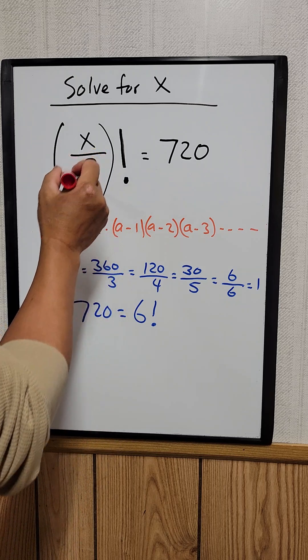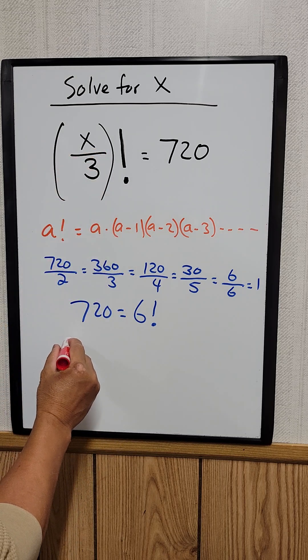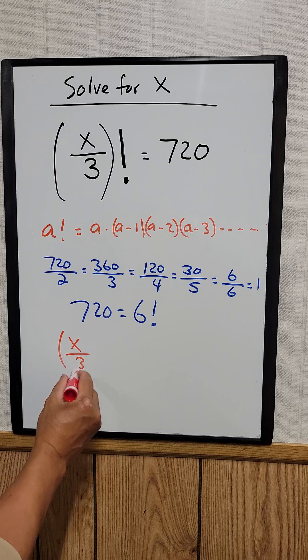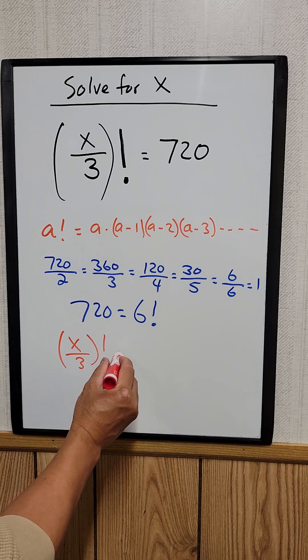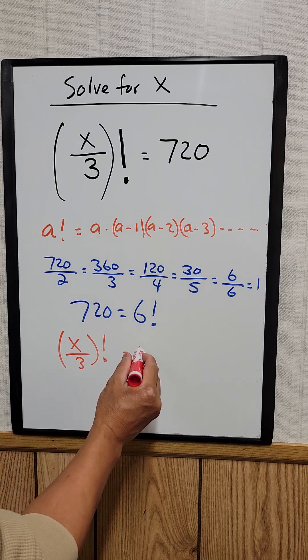And now we can rewrite this equation right here. x divided by 3 factorial equal to 6 factorial.